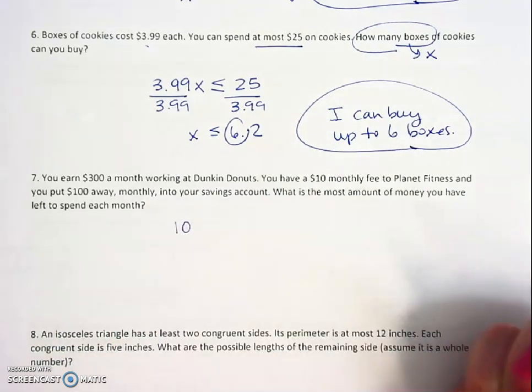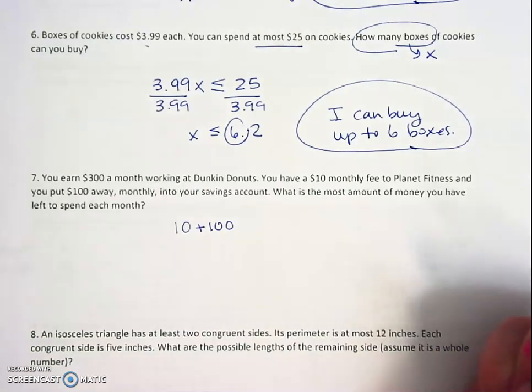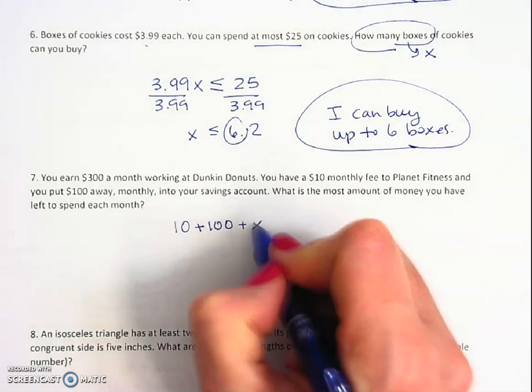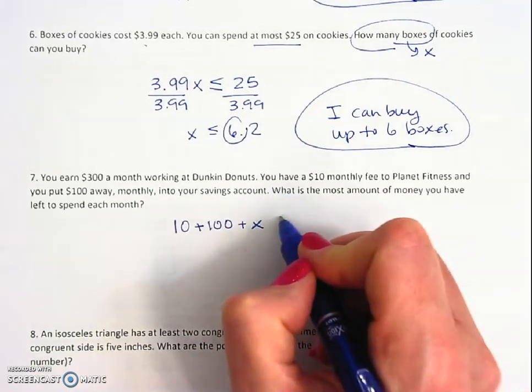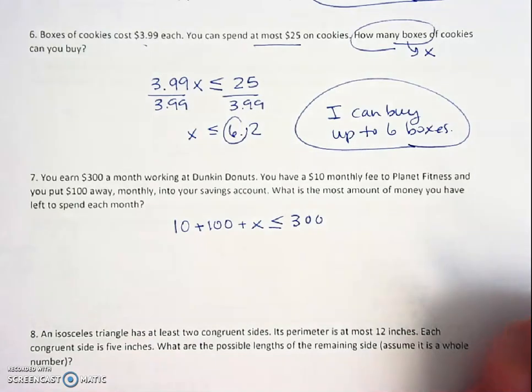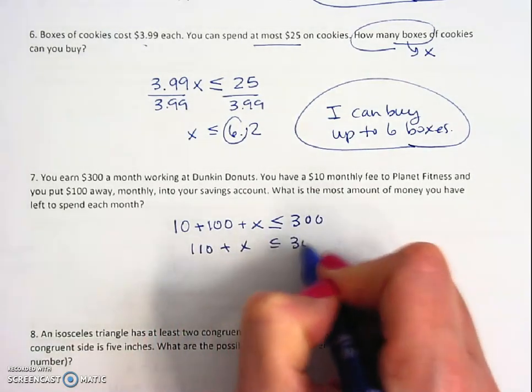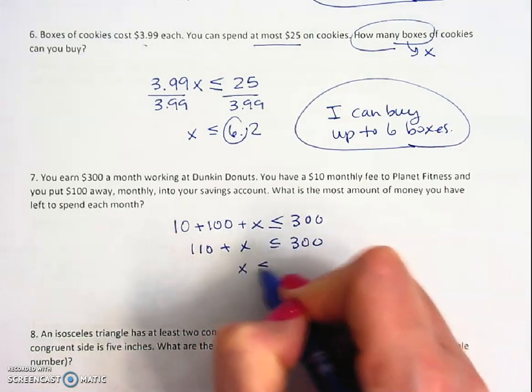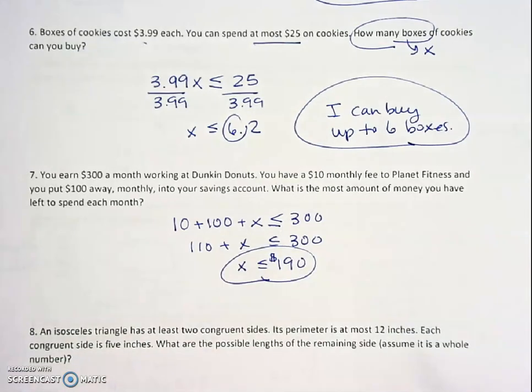So you spend $10 on Planet Fitness plus $100 that you put away each month, plus the x amount that you have left over, and all of that added up has to be less than or equal to $300. So we just combine like terms, subtract 110 to both sides, and we have $190 left to spend.